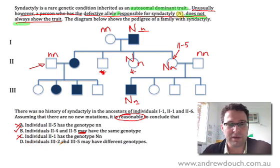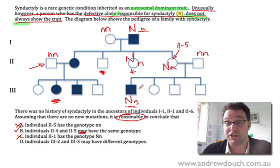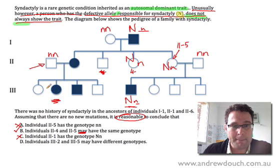And finally, individuals 3-2 and 3-5, so that's 3-2, this one, and 3-5, this one, may have different genotypes. Well, we've worked out what the genotype of this one must be already. This one here must have at least one big N, or else she wouldn't have syndactyly. But if her dad has the genotype little n, little n, then she must have a little n allele, which means that her genotype is exactly the same as 2-5's, not different. And so that's not a reasonable suggestion.